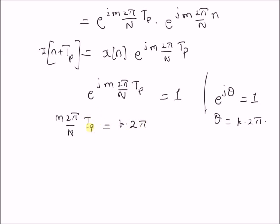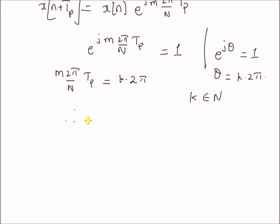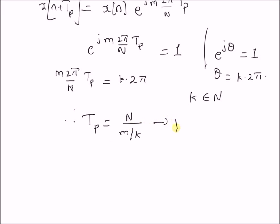Since Tp is a natural number, k should also be a natural number. Therefore, by simple algebraic manipulation, the period Tp equals N/m * k. We can easily derive that Tp = N*k/m. So this is the value of the period.